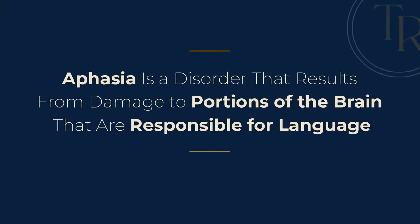According to the NIH, aphasia is a disorder that results from damage to portions of the brain that are responsible for language. It can be caused suddenly by a stroke or brain injury, or can be a result of a progressive neurological condition. Aphasia not only impacts speech production but can also impair the understanding of language as well as reading and writing. However, aphasia does not impact a person's intelligence or memory.